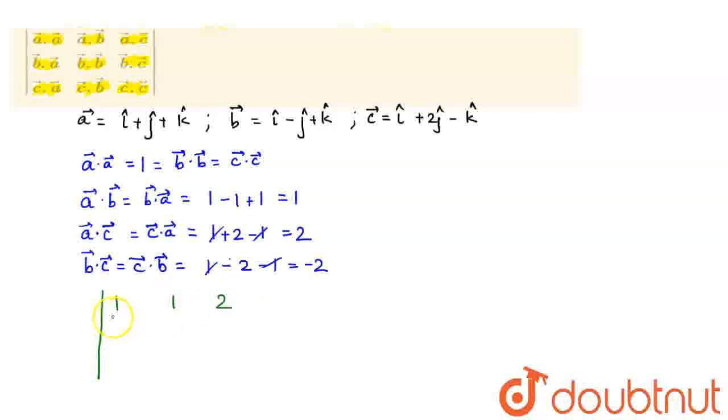Then B dot A which is 1, B dot B which is 1, and B dot C which is minus 2. Then C dot A which is 2, C dot B which is minus 2, and C dot C which is 1. So if we solve this, what do we get?